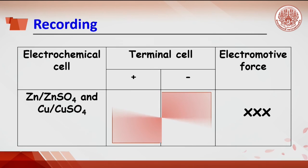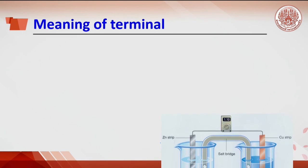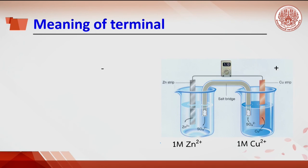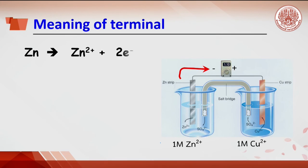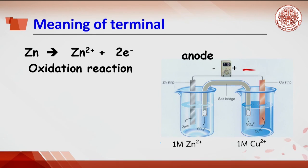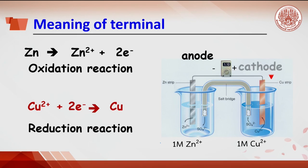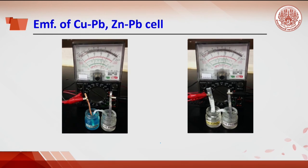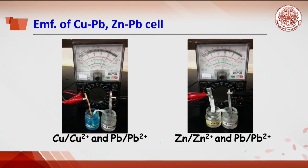In order to conclude which half cell undergoes oxidation or reduction reaction: for example, if the zinc strip is connected to the minus terminal, it means electrons move out from the zinc electrode. It can be concluded that oxidation reaction takes place at the zinc half cell — the anode terminal. The copper electrode gains electrons, so it is the reduction reaction — the cathode terminal.